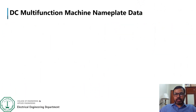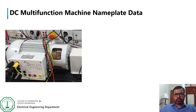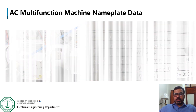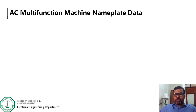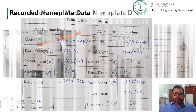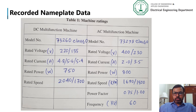Let's see how to read machine nameplate data. Here is our DC multifunction machine, and at the top of this machine there is a sticker. On the sticker you will see some numbers — these numbers are the nameplate data of our DC multifunction machine. Similarly, we can read the nameplate data of our AC multifunction machine. This table shows the recorded nameplate data for our DC and AC multifunction machines.